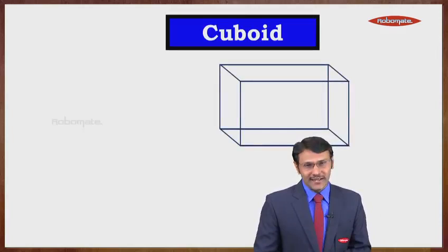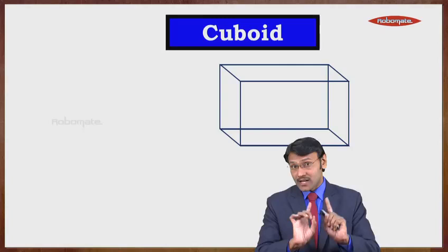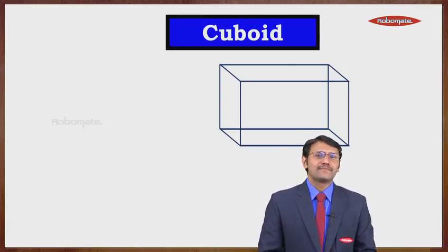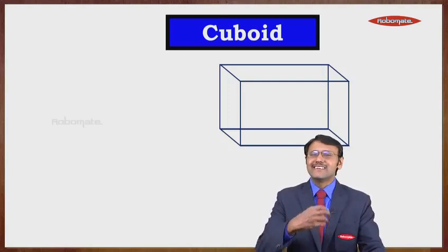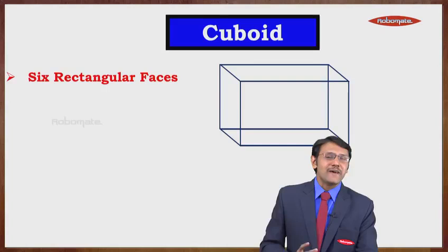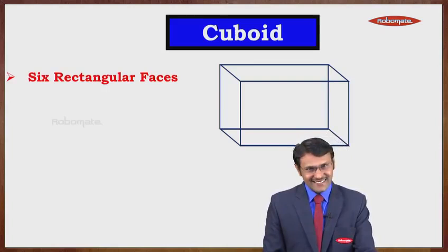Now we start with our next solid figure: the cuboid. Some examples of a cuboid in our day-to-day life: a brick, your textbook, your notebook, a compass box, a fish tank, and different sizes of boxes. The cuboid has basically six rectangular faces.